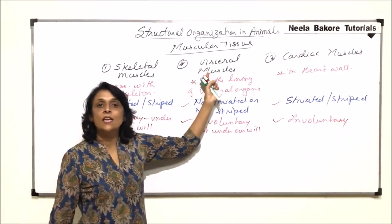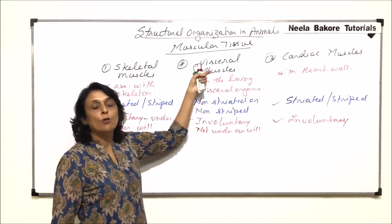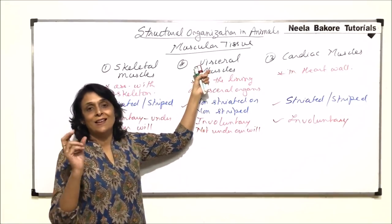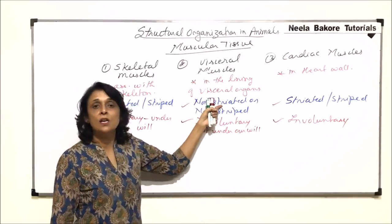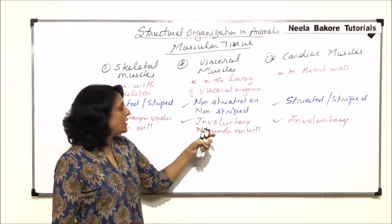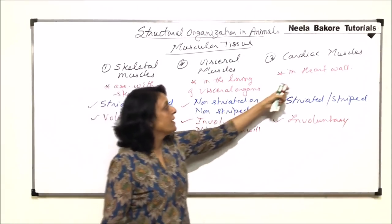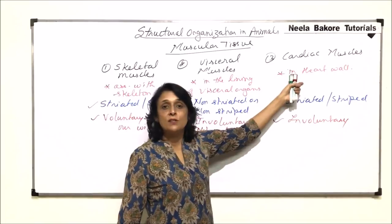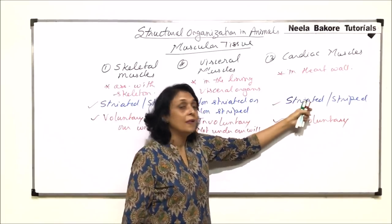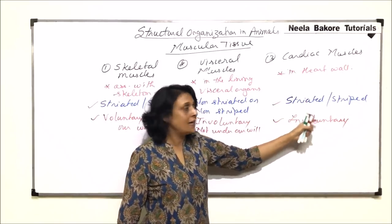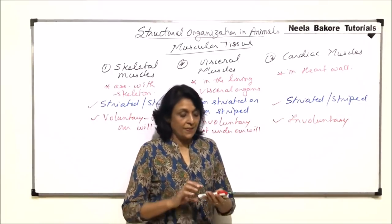The same applies to visceral muscle: located in the lining of the viscera, so called visceral; no striations; and not under our control. Cardiac muscles are found in the heart wall — they show striations and are involuntary.